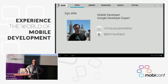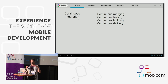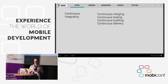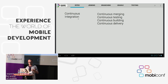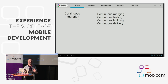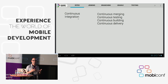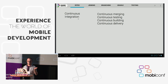Continuous integration means continuous merging — different branches should be merging with each other. It's about continuous testing: we don't need a dedicated team testing applications, we trust the machine. There is continuous building, delivering the application several times a day with each commit. And there is automatization. As a general rule, machines are better than humans when it comes to mistakes — they don't make any. Just watch Terminator.